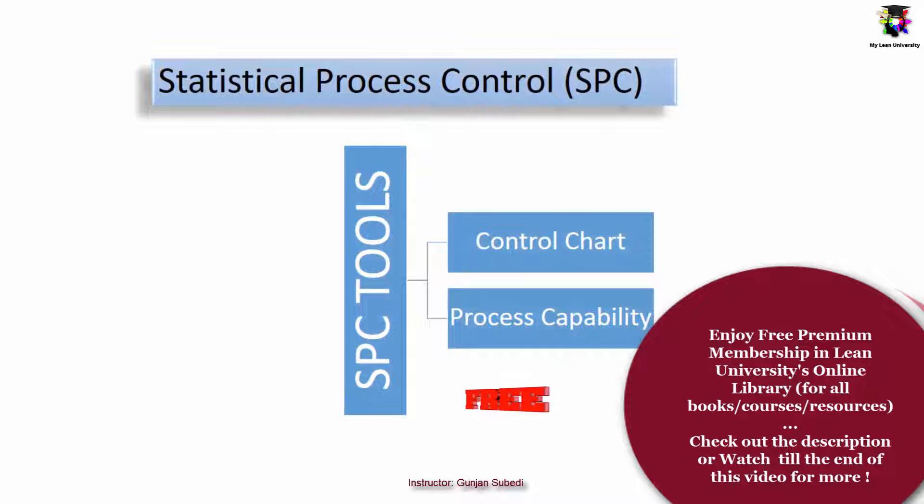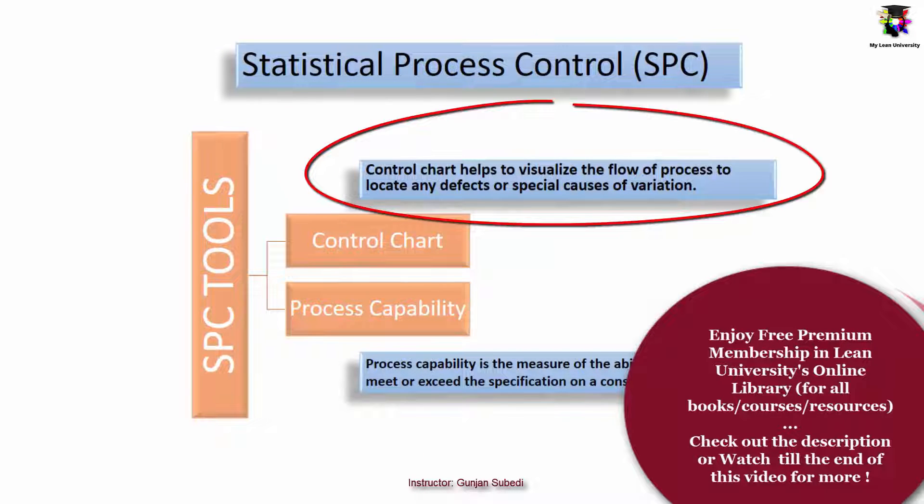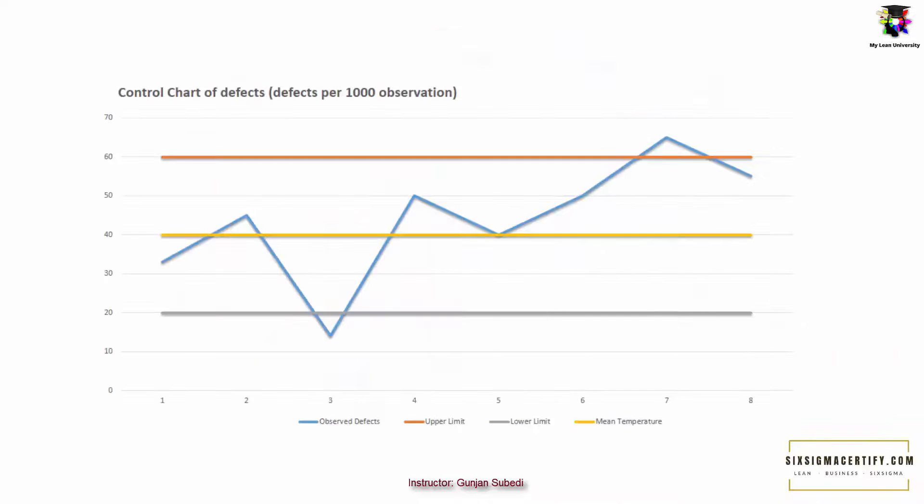We use tools such as control chart and process capability as tools of the statistical process control. The control chart helps to visualize the flow of process to locate any defects or special causes of variation. See this example. Here a machine is producing some goods at an hourly production rate of 1000 parts per hour. Suppose the defect rate is 20 to 60 defects per 1000 parts is normal. So we have 20 and 60 as lower and upper control limits. You can see that inside these lines of upper and lower control limit there are some variations which are due to common causes variation.